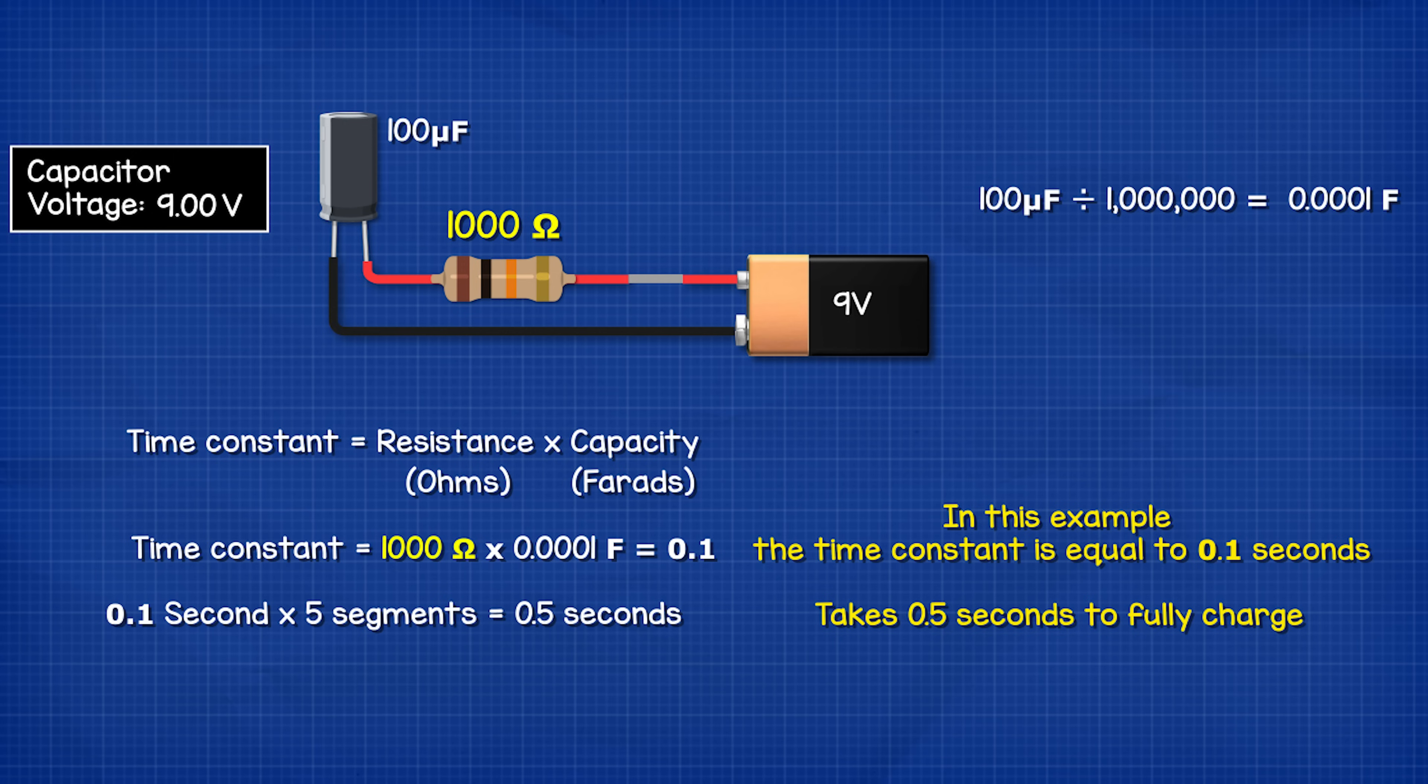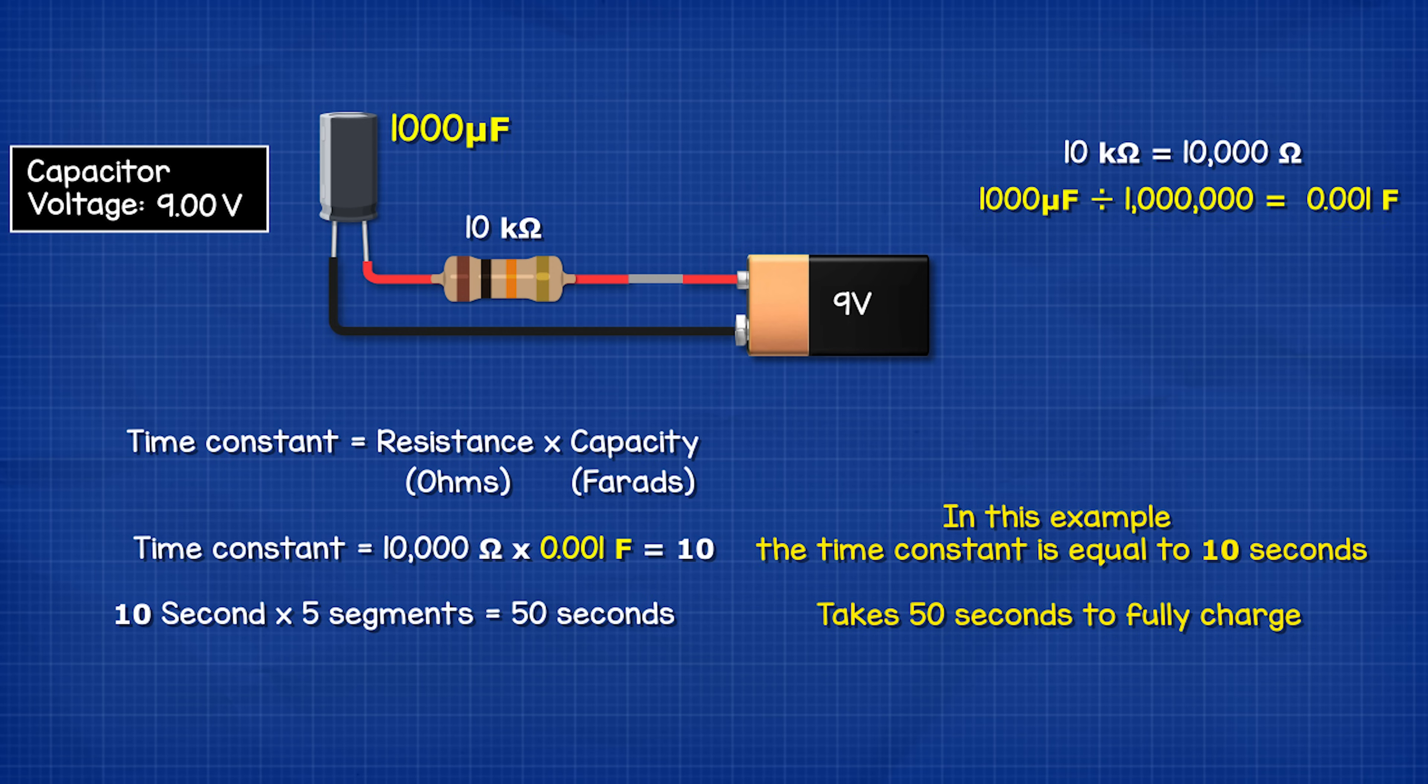If the resistor was just 1,000 ohms the time constant would be 0.1 seconds. So it would take 0.5 seconds to reach nine volts. If the capacitor was 1,000 microfarads it would take 50 seconds in total.